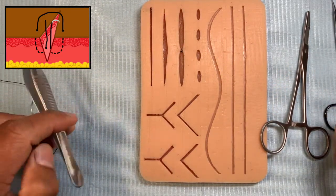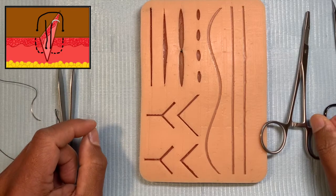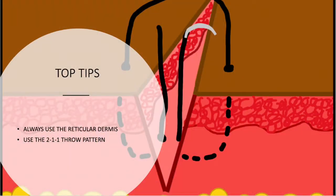This suture, as far as the top tips go, always take the deeper dermis because dermis has got two elements. You've got the papillary dermis and the reticular dermis. So you want to take the reticular dermis for this and you can see it when you visualize the skin surface.